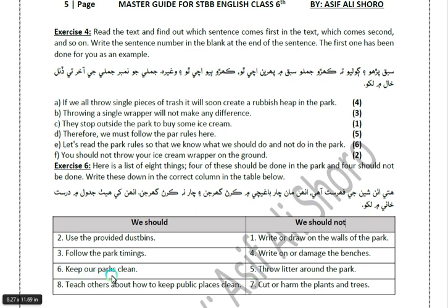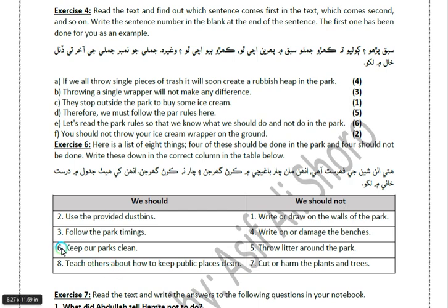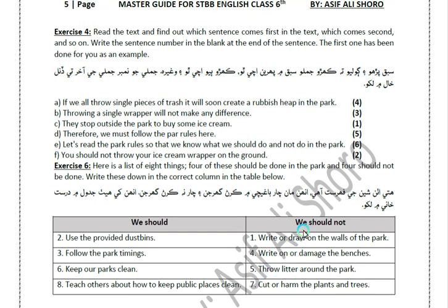Number 6 is: keep our parks clean. Number 7 is: cut or harm the plants and trees. Number 8 is: teach others about how to keep public places green.